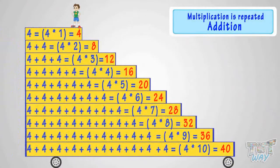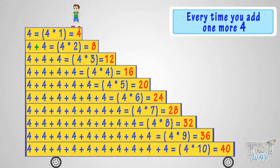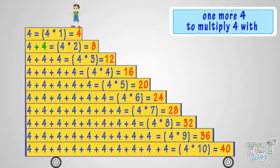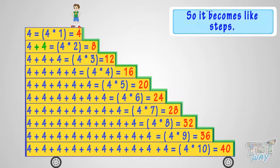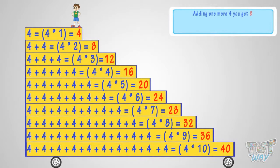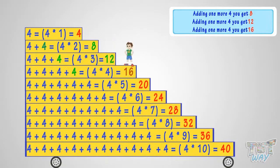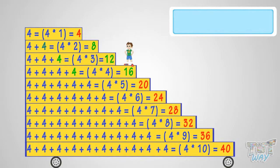Good! We have learned that multiplication is repeated addition. See the figure. Every time you add one more four to multiply four with a bigger number, it becomes like steps. Adding one more four, you get eight. Adding one more four, you get twelve. Adding one more four, you get sixteen, and so on. So, it's a step counting by four.